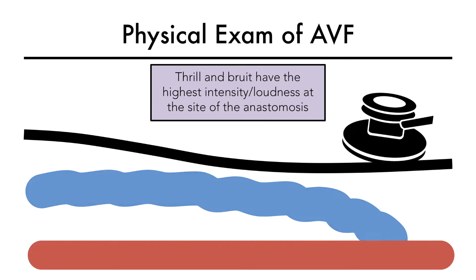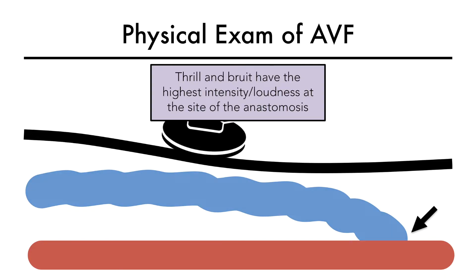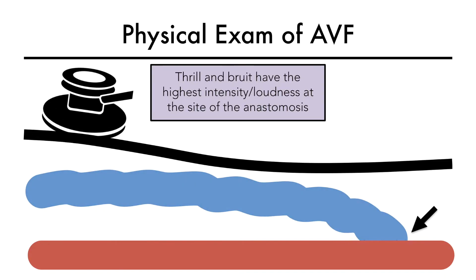When you auscultate a normal fistula, you should hear a low-pitched rumbling bruit with systolic and diastolic components. The thrill and bruit are most prominent at the anastomosis. As you move downstream along the vein, that is, as you go proximally up in the arm, away from the anastomosis, the thrill and bruit should gradually diminish in intensity but should maintain their character.